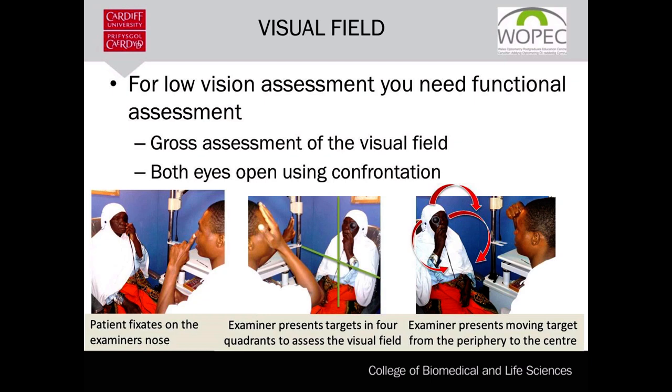The clinician brings a target from the periphery to the center — from a non-seeing side to the seeing portion — at various angles. This helps to detect scotomas, or areas of visual field loss surrounded by seeing areas. This test can be done on both eyes at the same time or on each eye separately.